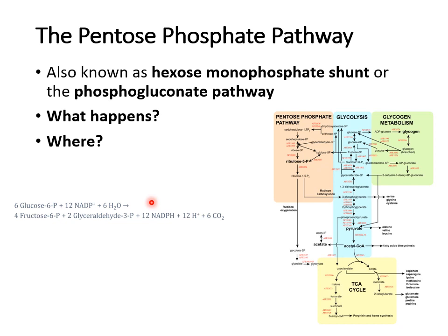We call NADPH 'money in the bank.' The other aspect of the pentose phosphate pathway to remember is that it also produces pentoses, which are five-carbon sugars, and that includes ribose 5-phosphate. That's an important one because it's a precursor for making nucleotides — nucleotides and nucleic acids.